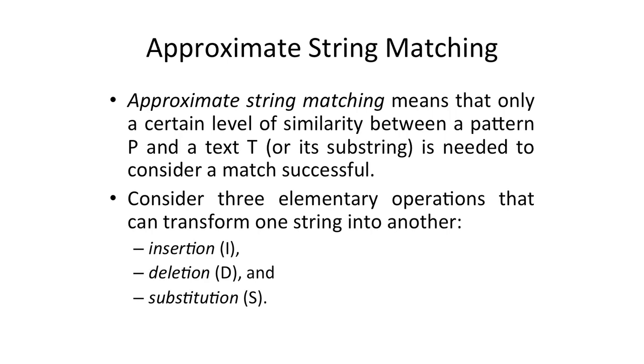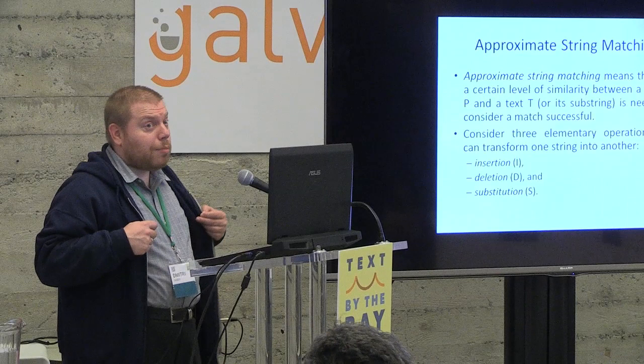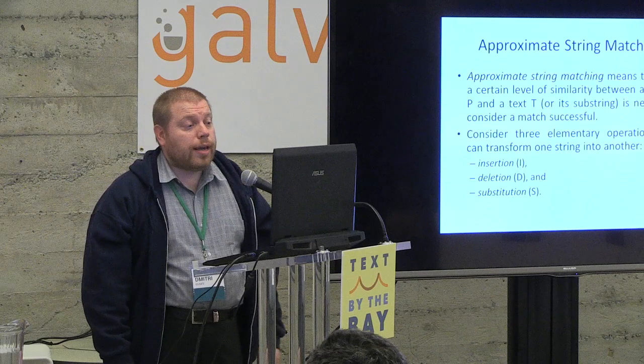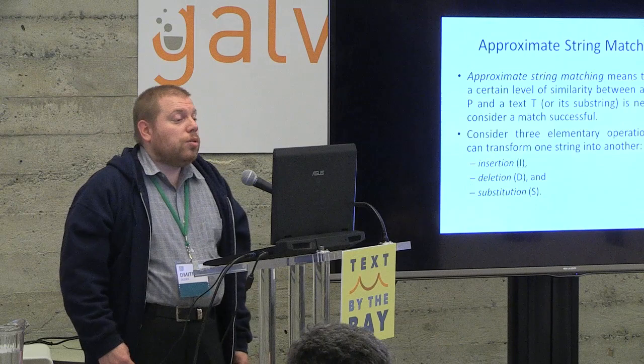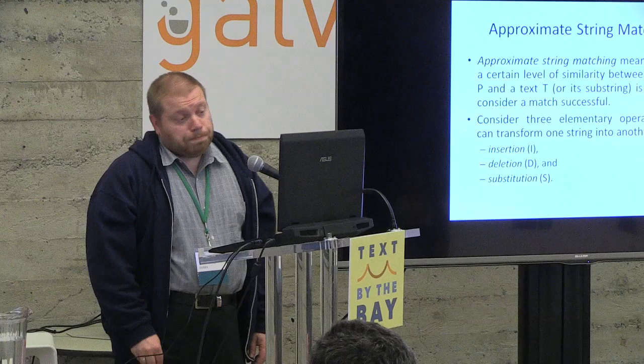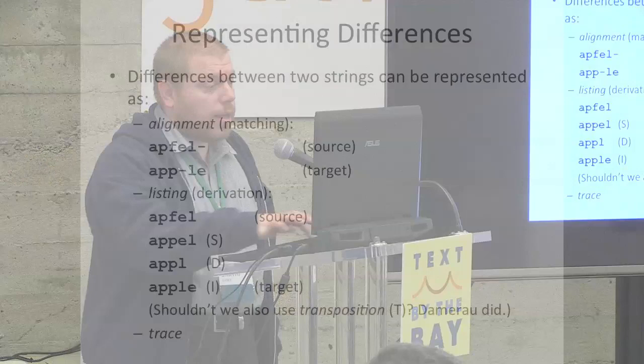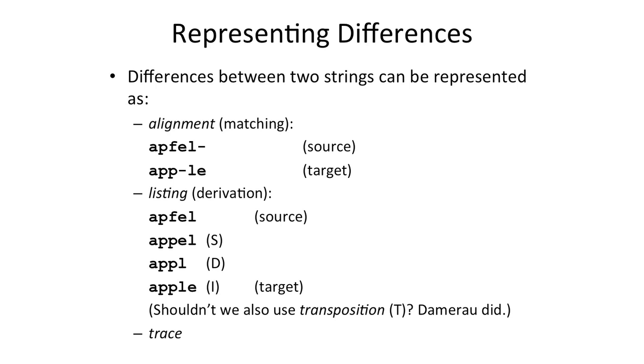What we do with the words that represent those meanings involves approximate string matching with some interesting variations. The tradition comes from Damerau and Levenshtein, initially used for correction of typos and spell checking. The basic operations are insertion, deletion, and substitution, which allow transforming one word into another — as in this example from the textbook, transforming the German 'apfel' into English 'apple.' Interestingly, not using transposition, which Damerau did, where transposing E and L at the end would give a better distance from 'apfel' to 'apple.'